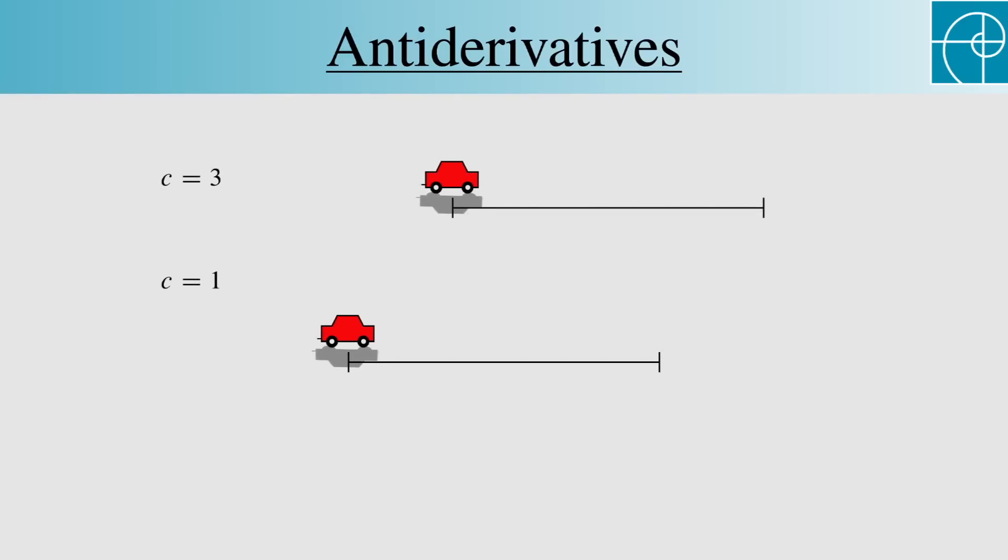And if the cars both move at the same rates, then the derivatives can't be distinguished, but the positions aren't the same, since one car starts farther back than the other.